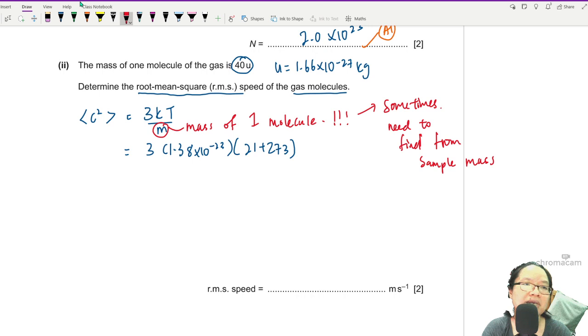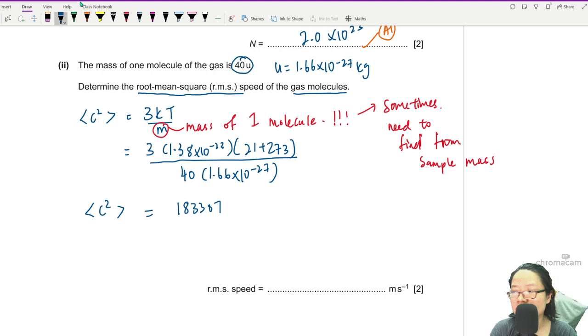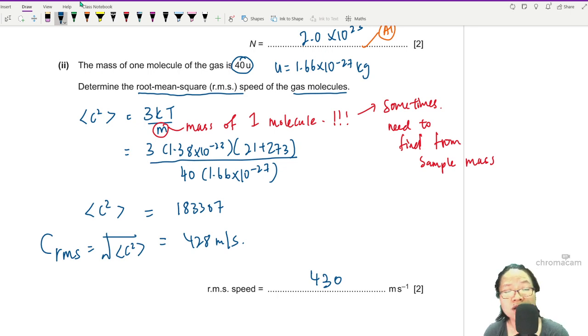the sample mass. 20 grams of gas, something like that. So we use the molar concept, the mole concept, but this one I don't have. So we can just take 40 times 1.66 times 10 to the power of negative 27. So if we press our calculator for C square, this will give us 183307. I tend to do this a lot because RMS speed CRMS will be equal to square root of C square, and that would give me 428 meter per second. And if I want to write this in 2SF I can write 430. Very easy. This gas question is: do you remember the equation and do you know how to use it? Very little analysis.